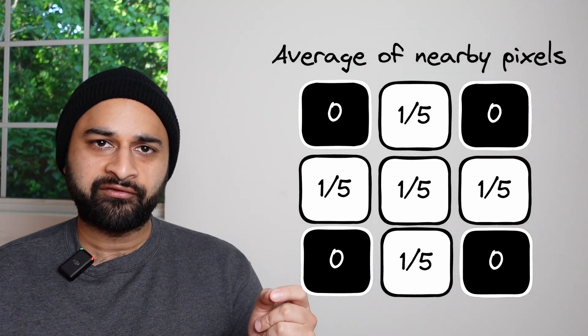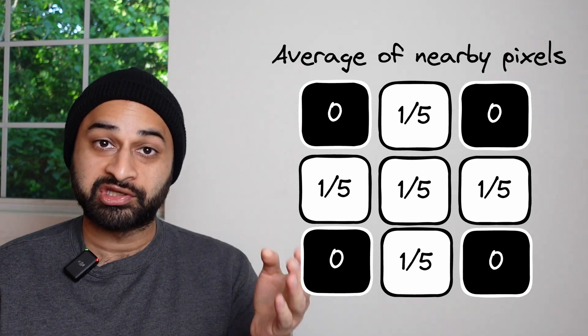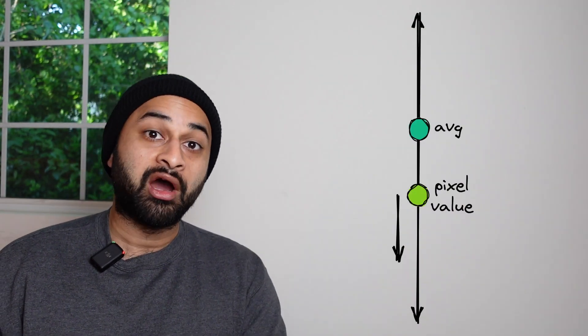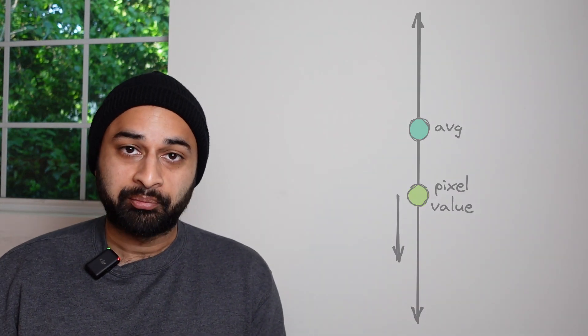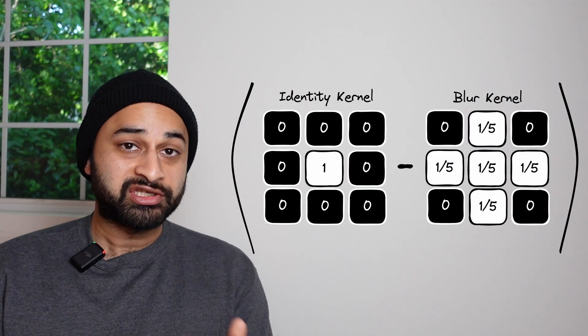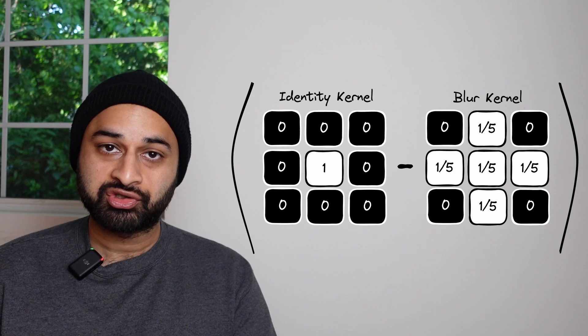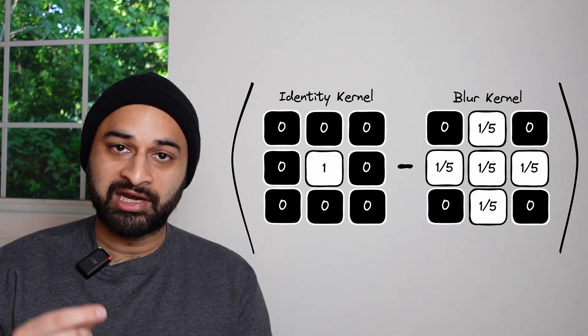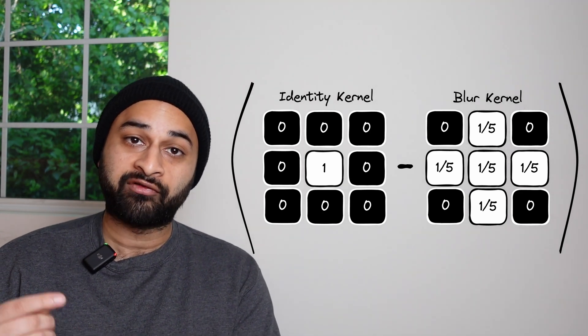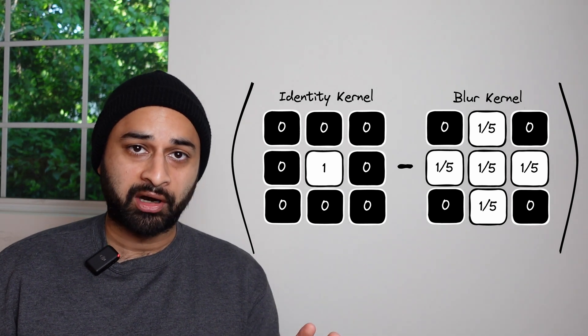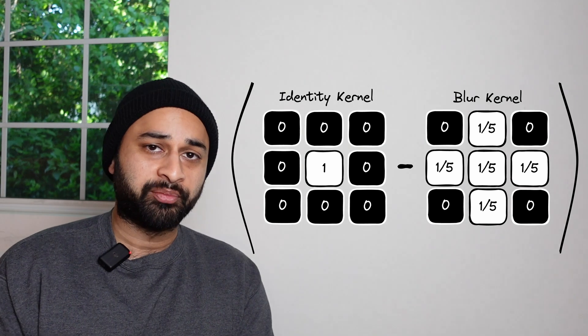Starting with the blurring kernel or blurring matrix, we know its job is to give us the average of the pixel values to its top, left, right, bottom, and also itself. Now in sharpening, we want to take a pixel's value and move it away from this average. We'll achieve that by taking what we call the identity kernel — which just maps a pixel's value to itself — and from the identity kernel, we're going to subtract the blurring kernel. What we're doing is taking a pixel's value and taking away the average of the pixel values in its neighborhood, so that we move a pixel's value away from that average neighborhood value. This difference is intuitively measuring the distance between a pixel's value and the pixel values around it.